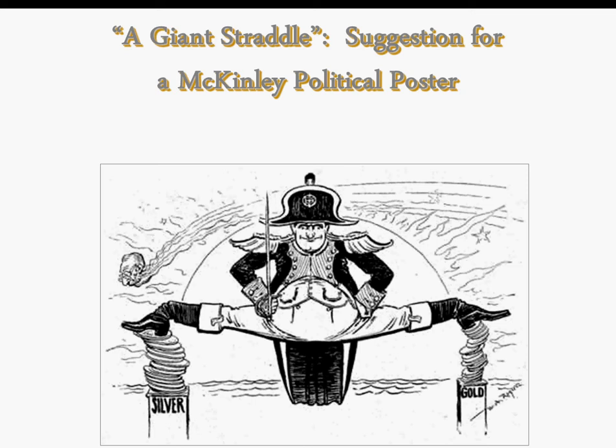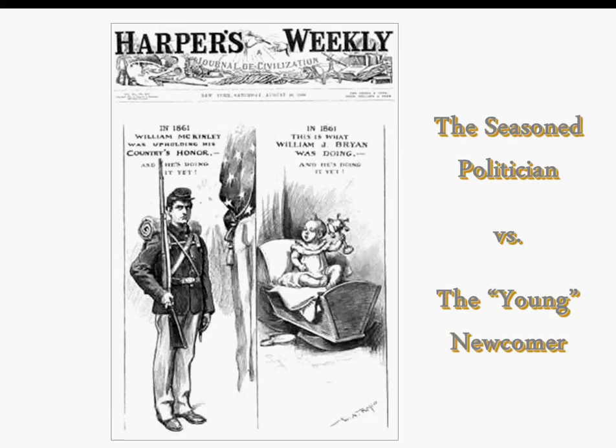He didn't talk about the gold/silver issue too much because he didn't want to lose votes — that's what politicians like to do: straddle issues and keep voters in the dark. He was seen as a seasoned politician where the young newcomer William Jennings Bryan was seen as a child. McKinley had been a veteran of the Civil War — he was a man you could trust.